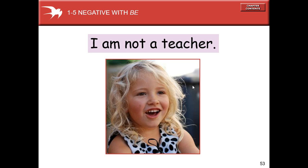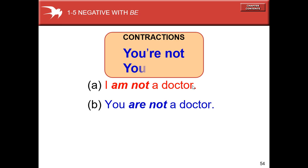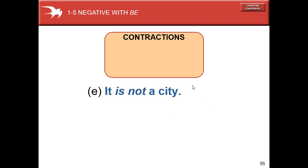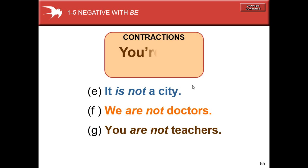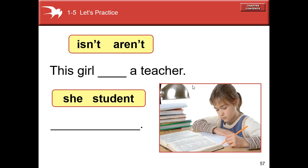Now the negative of the verb to be. I am not a teacher — well, I am, but let's pretend I'm not for the moment. Contractions: I'm not a doctor — this is true. I am not / I'm not. Now it's your turn: the women — isn't or aren't nurses? Aren't nurses — they are doctors. The girl isn't the teacher — she is a student. This animal isn't a dog — it's a cat.